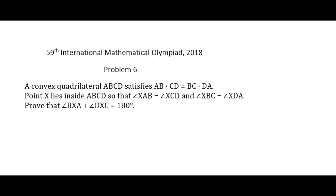This is problem number 6 of the 2018 International Math Olympiad held in Romania. A convex quadrilateral ABCD satisfies AB times CD equals BC times DA. Point X lies inside ABCD so that angles XAB and XCD are congruent and angles XBC and XDA are congruent. Prove that the sum of angles BXA and DXC equals 180 degrees. The description is short, but certainly not as simple as it sounds.